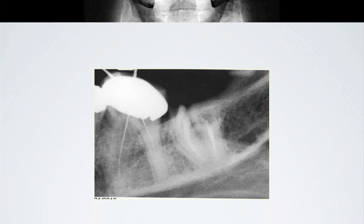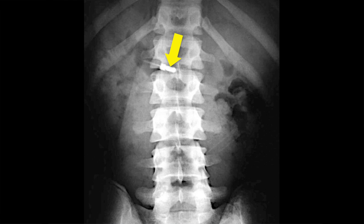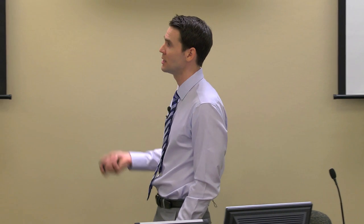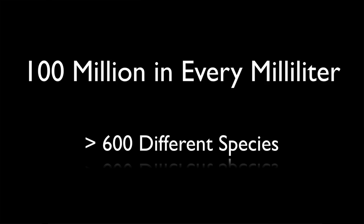We can use scare tactics and say, well, if you don't use a rubber dam, your patient's going to aspirate the file. But how often does this really happen? Probably not very often. And those people who choose to do endodontics without a rubber dam are certainly willing to take that risk. This is why we should all be using the rubber dam — this is what's in one milliliter of saliva. These bacteria are just waiting to get into your case and cause your treatment to fail. So this is the main reason we use rubber dam: to follow an aseptic protocol.